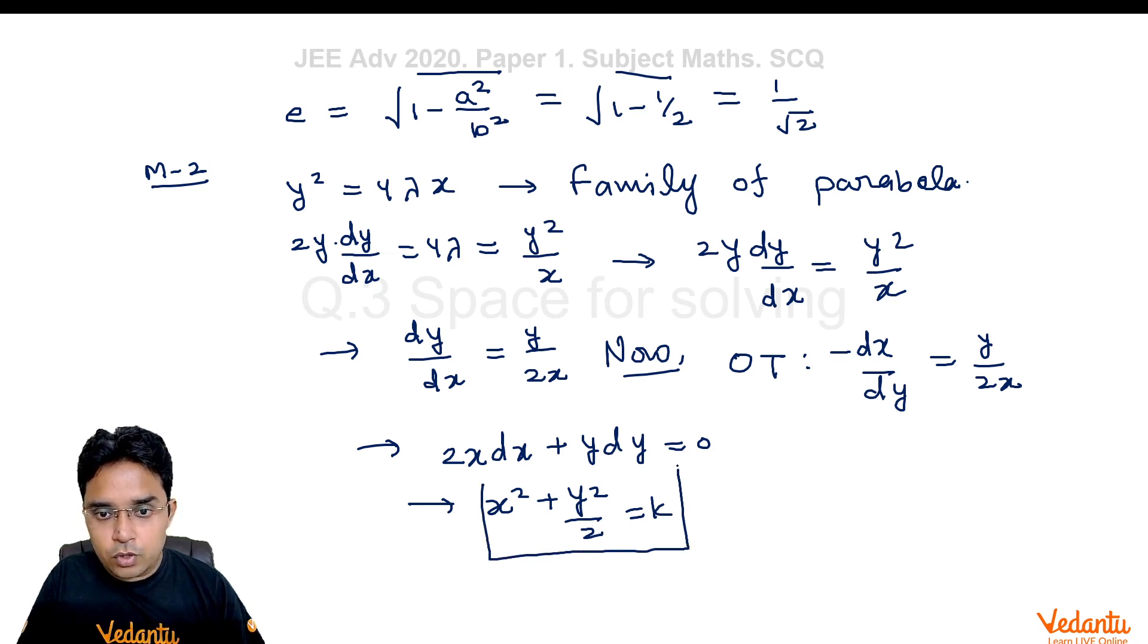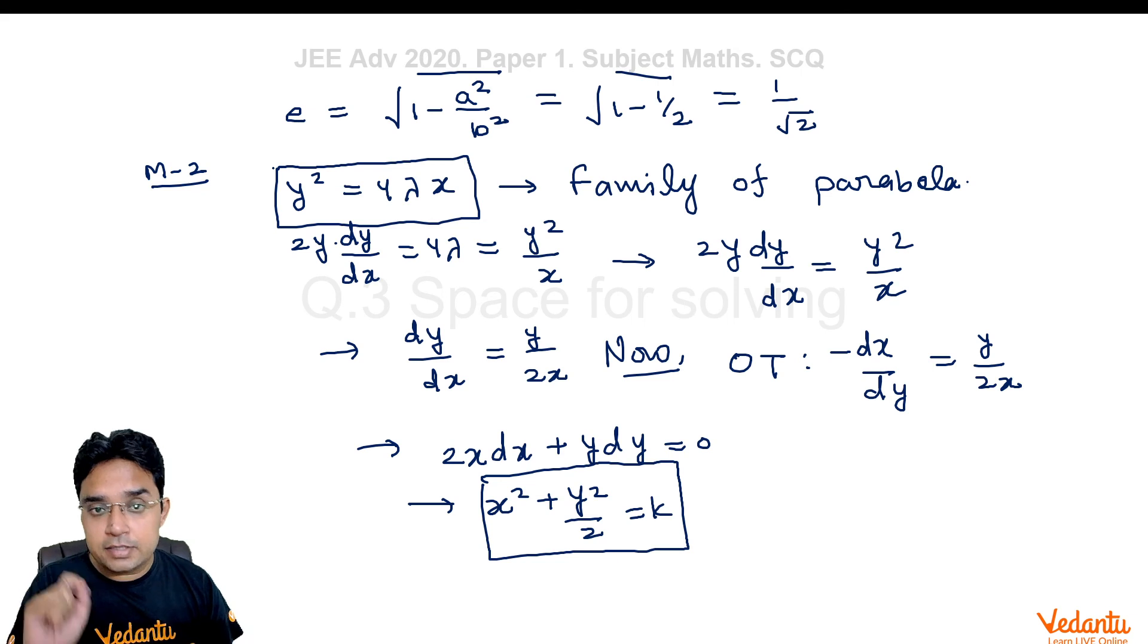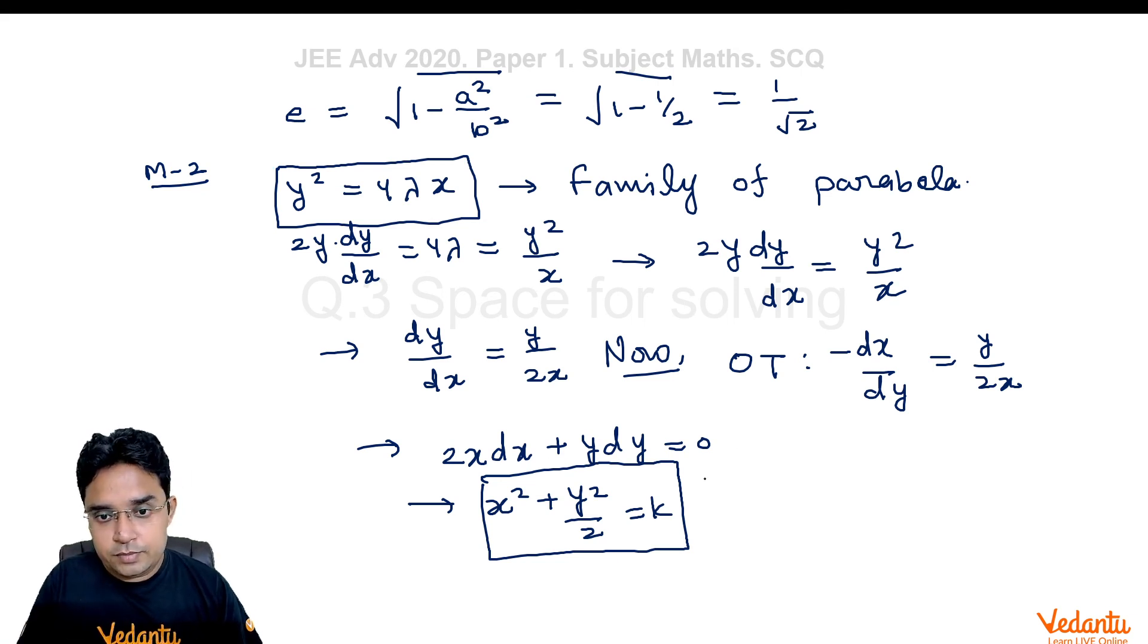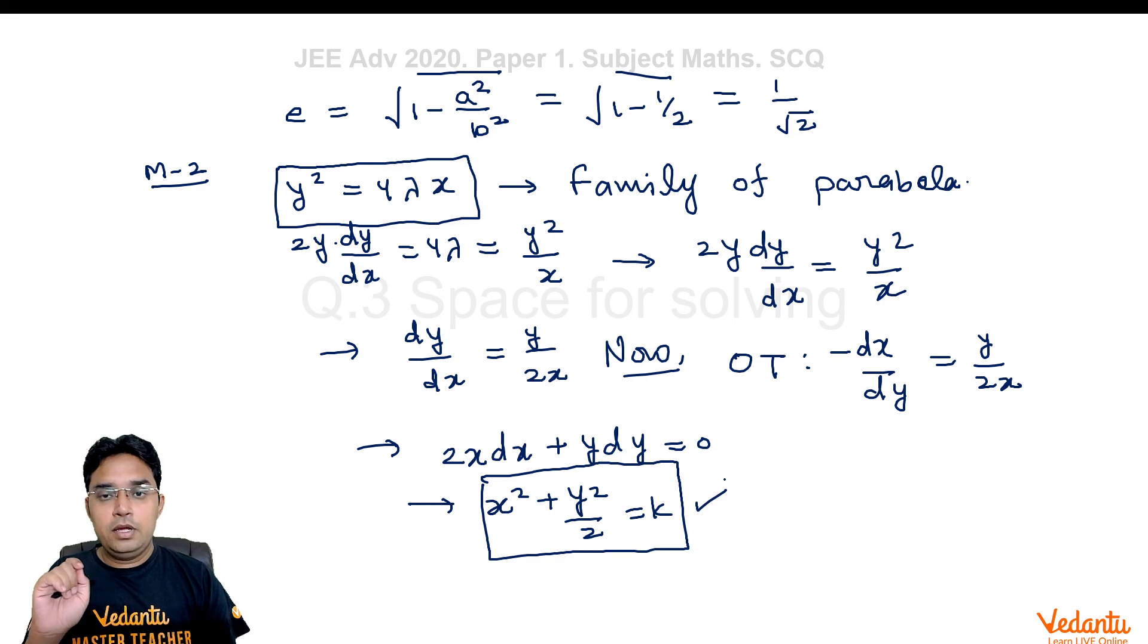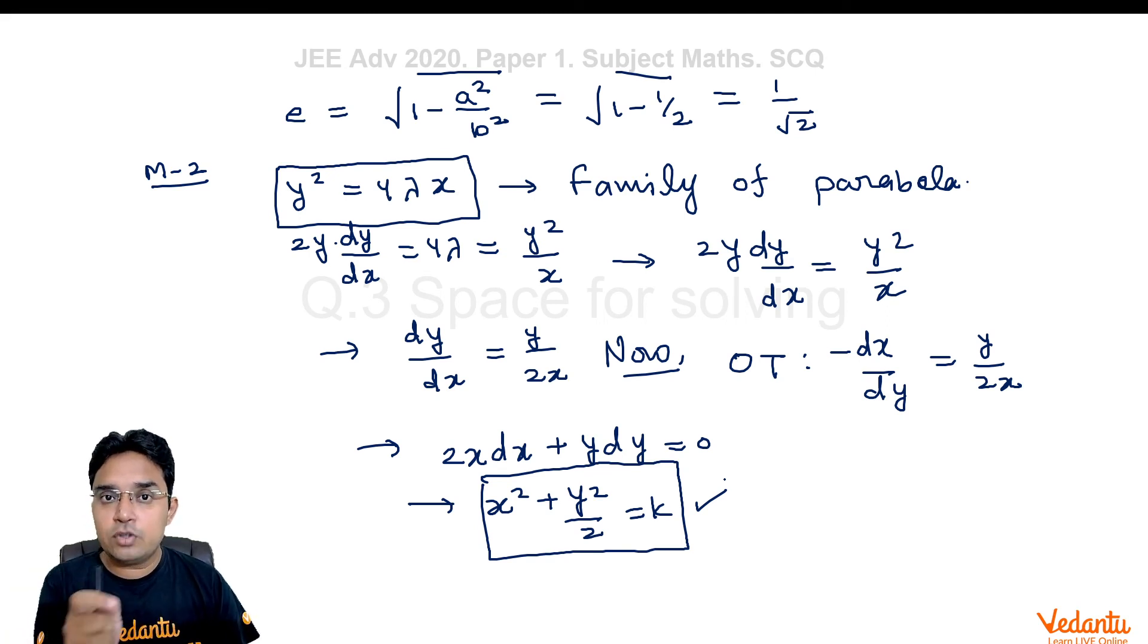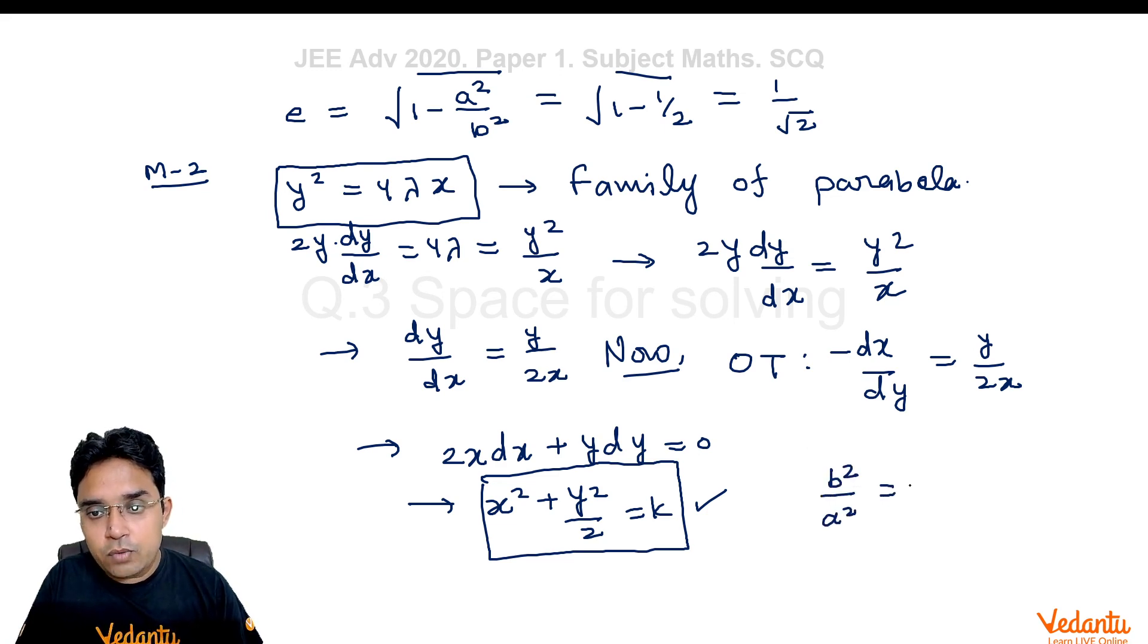This is the equation of orthogonal trajectory for the given family of parabolas. Now, what is very important thing here is that any such ellipse will be intersecting the parabola at 90 degree only. It is not that this ellipse is intersecting the parabola at the ends of the latus rectum then it is intersecting at 90 degree. It is not. In fact, every such ellipse where b²/a² = 2 is going to intersect this parabola at 90 degree only.